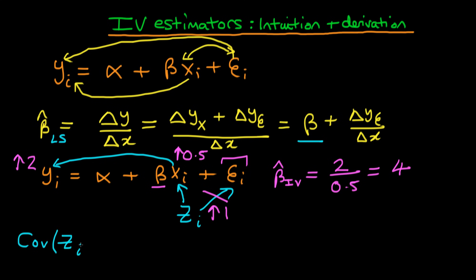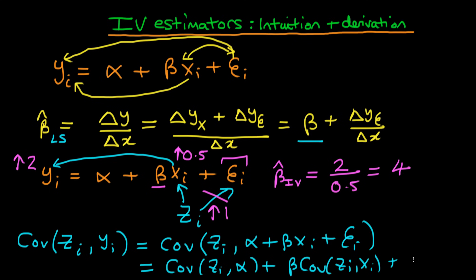So the left-hand side is that we have the covariance of zi with yi. And from the right-hand side, we know that this has to be equal to the covariance of zi with, just replacing yi by this stuff on the right-hand side, alpha plus beta xi plus ei. And we can simplify this expression on the right-hand side a bit. So we have that this is equal to the covariance of zi with alpha plus beta times the covariance of zi with xi, plus the covariance of zi with ei.